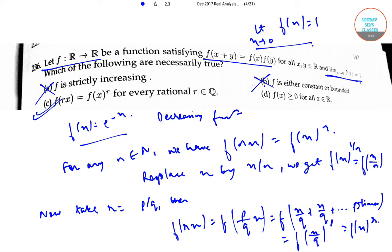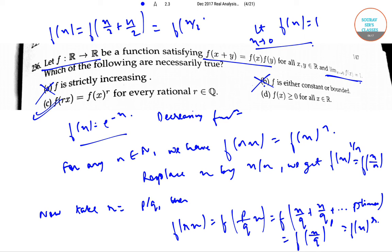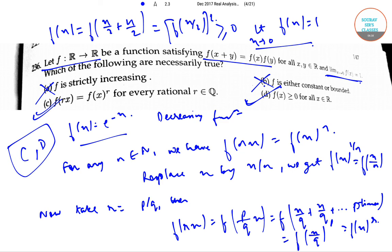Option D: f(x) greater than or equal to 0 for all x. We can write f(x) as f(x/2 plus x/2), which equals f(x/2) whole squared. This means for any x, f(x) is a perfect square and thus f(x/2) squared is greater than or equal to 0, so f(x) is greater than or equal to 0. Option D is correct. Therefore C and D are the correct options.